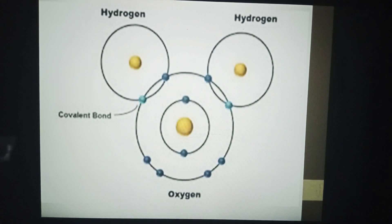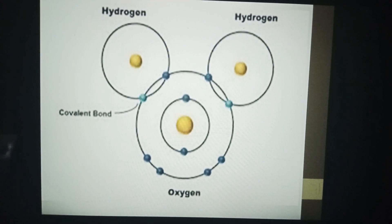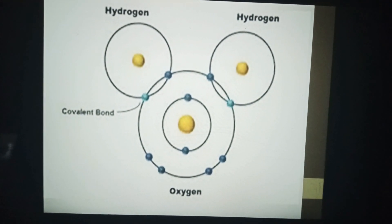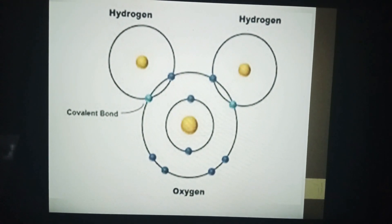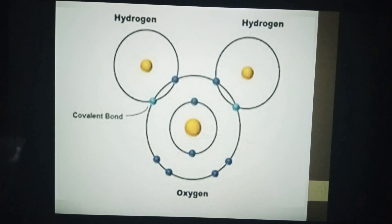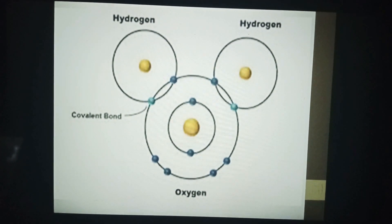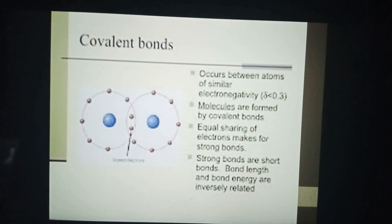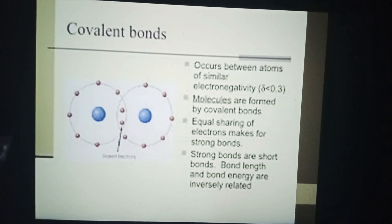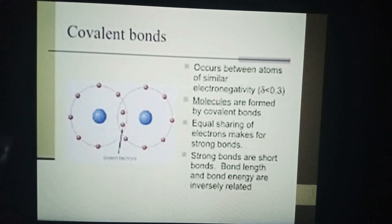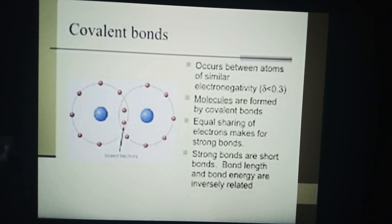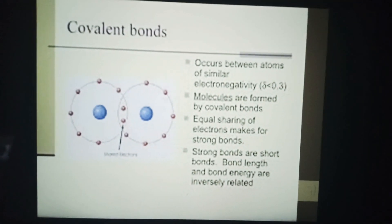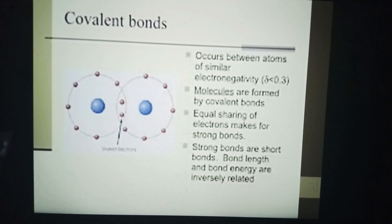This is the type of covalent bonding between two hydrogen atoms and one oxygen atom, and it is the structure of water. The chemical formula of water is H₂O. Covalent bonds occur between atoms of similar electronegativity. Molecules are formed by covalent bonds, and equal sharing of electrons makes for strong bonds.